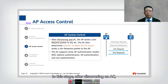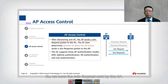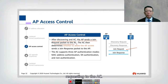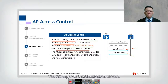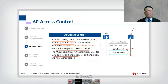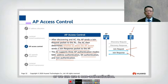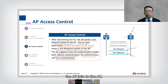After discovering an AC, the AP sends a join request to the AC. The AC determines whether to allow the AP to join by using a join response. The AC supports three authentication modes: pre-configured MAC address authentication, serial number authentication, or no authentication. These are the three methods for configuring an AP to join the AC.